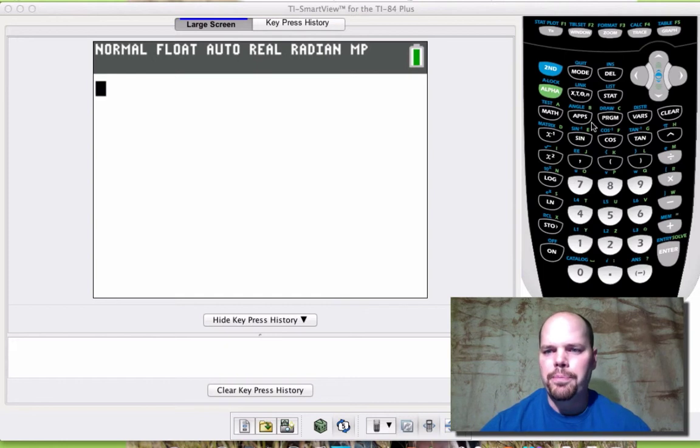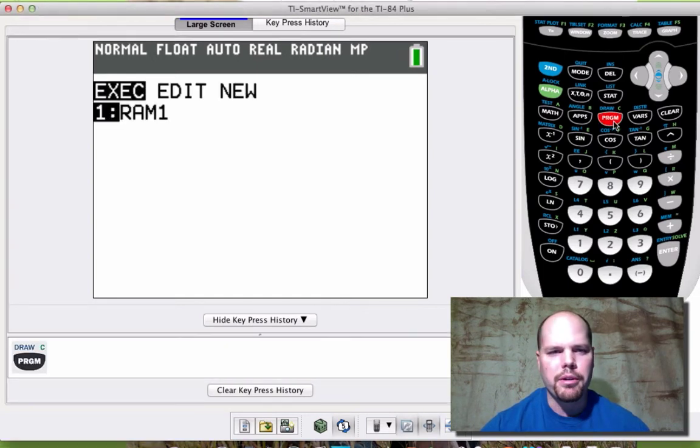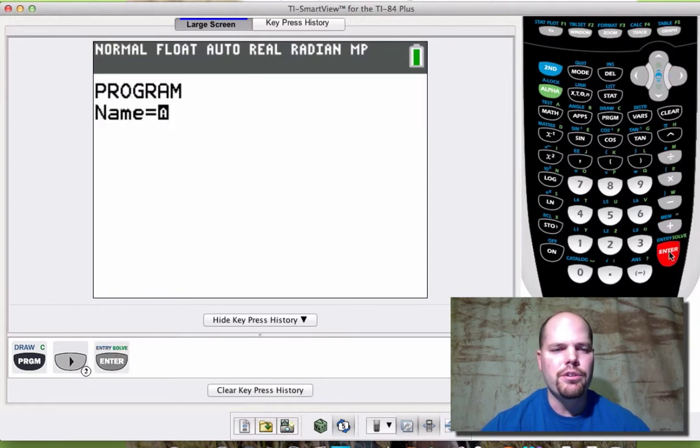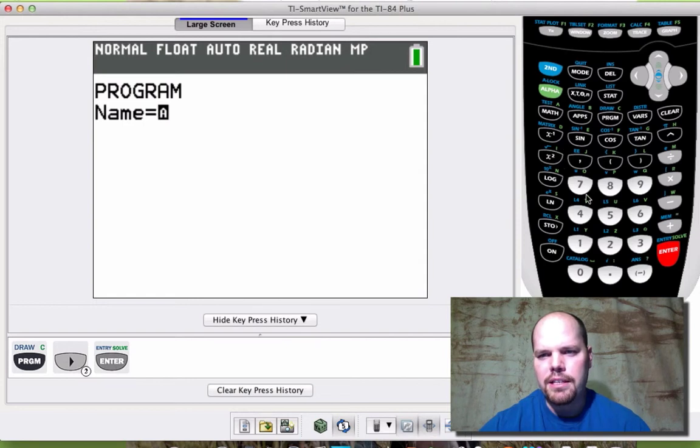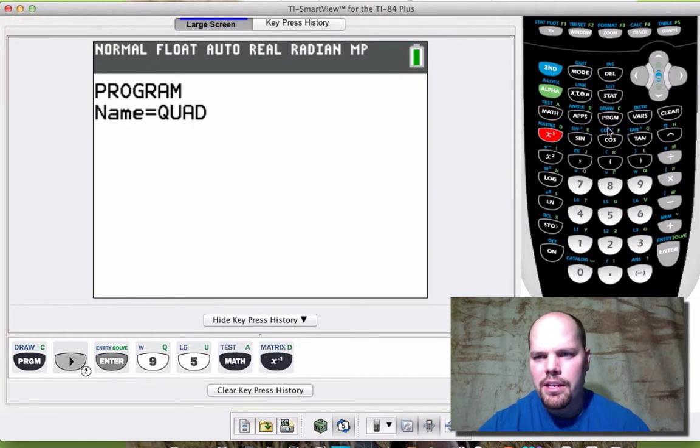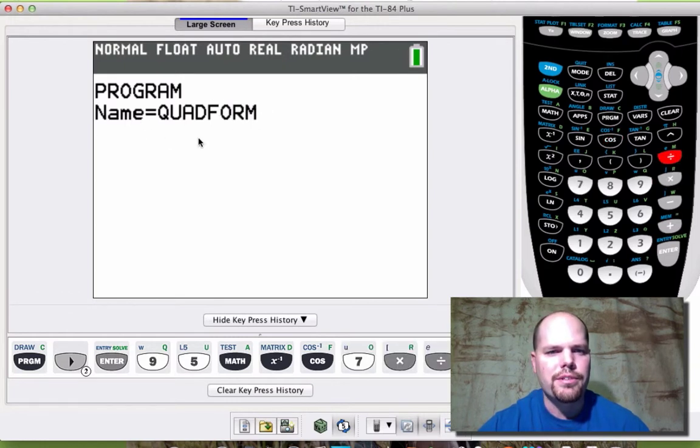First thing you want to do is press program. We are going to make a new program. So scroll to the right, create new. Let's name this maybe something like QUADFORM for quadratic formula. So Q-U-A-D-F-O-R-M. You get eight characters to use, eight letters to use. Press enter.